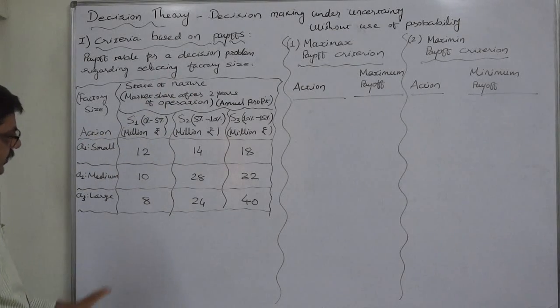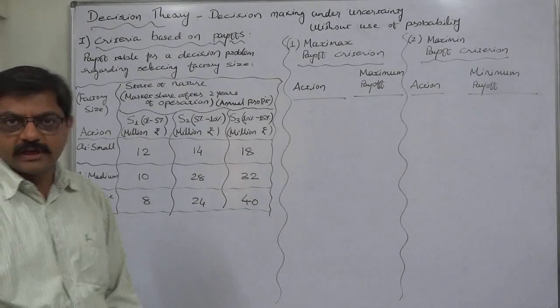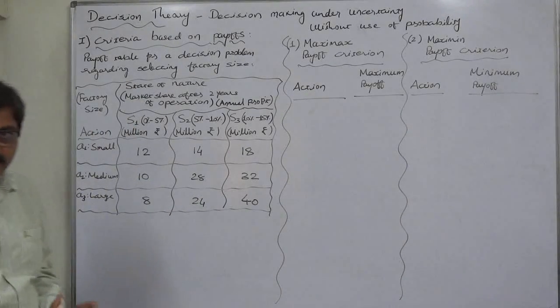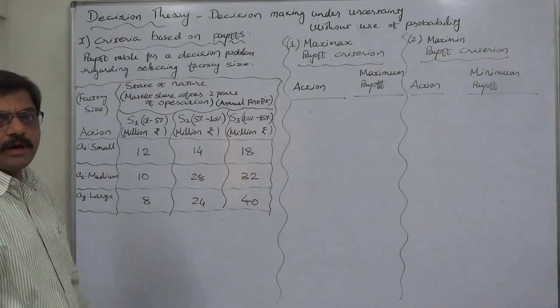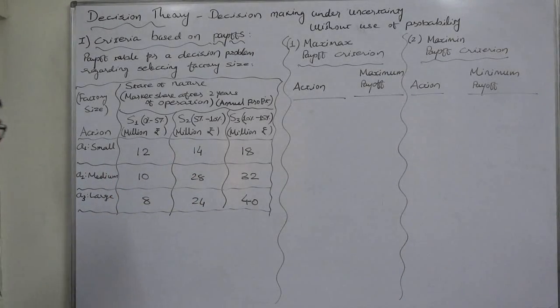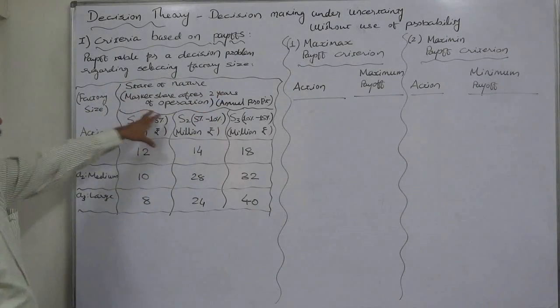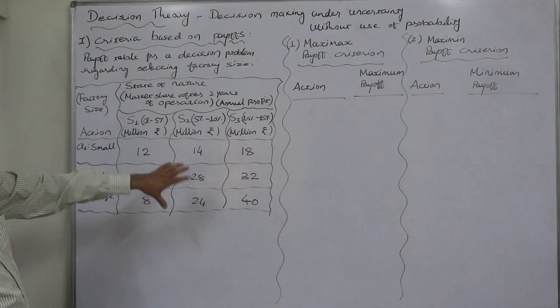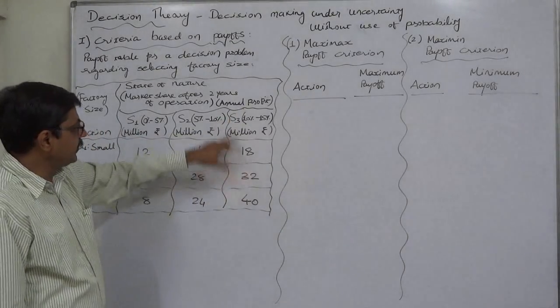As we know, these three are mutually exclusive and exhaustive, that means there is no fourth possibility. Mutually exclusive means at the time only one of these three can happen. They are actually the company's expected market share after two years of operation and the objective function is objective variable is annual profit in millions of rupees.